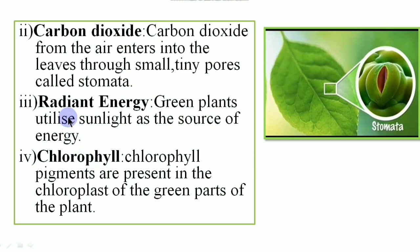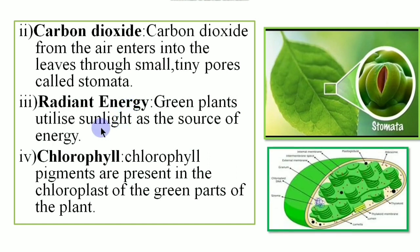Then the radiant energy is available from the sun. Then chlorophyll. This is the diagram of the chloroplast which is a cell organelle and it is present in the cytoplasm of the plant cells and the internal structure of the chloroplast shows the flattened sacs. So the membrane of the flattened sacs contain chlorophyll pigments.